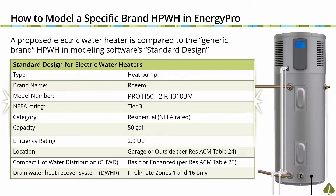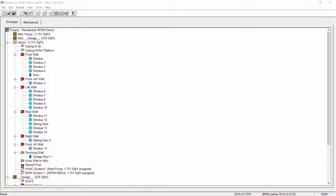To receive a compliance credit for a heat pump water heater requires using a specified make and model number unit, which must be listed on the NEA Advanced Water Heater Specification Qualified Products list as a Tier 3 or higher rating. Let's demonstrate how to input a Rheem model number PRO H50 T2 RH310BM unit in Seabec Res. For the specified brand heat pump water heater demonstration, we'll use the same model and pick up where we left off from the generic heat pump water heater section.